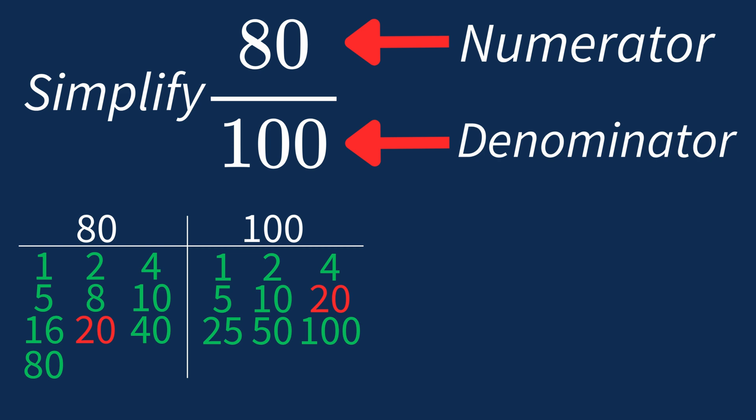Dividing the numerator 80 by 20 gives us 4. Dividing the denominator 100 by 20 gives us 5. So after dividing, the simplified fraction is 4 over 5.